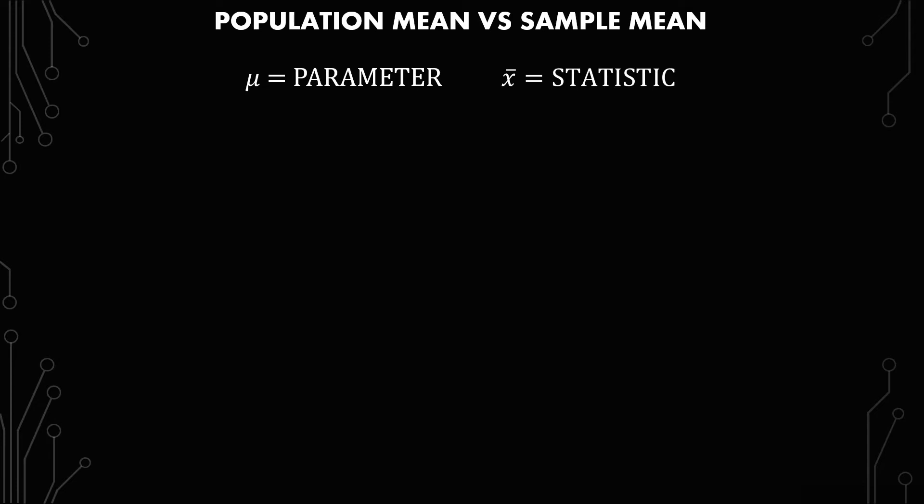The reason for that is very rarely do you have the capability of doing a census where you look at everything. Usually it takes up too much time, too many resources. So we use samples, and with those samples we come up with statistics that then approximate what the parameter is.